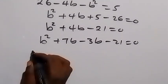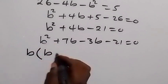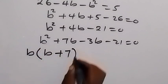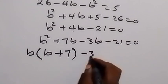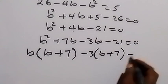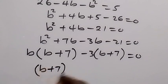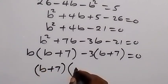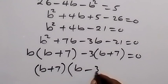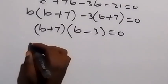Grouping the terms, we have b into bracket b plus 7, then minus 3, with b plus 7 common on the right as well, equals 0. We take out b plus 7 as the common factor, giving b plus 7, into bracket b minus 3, equals 0.